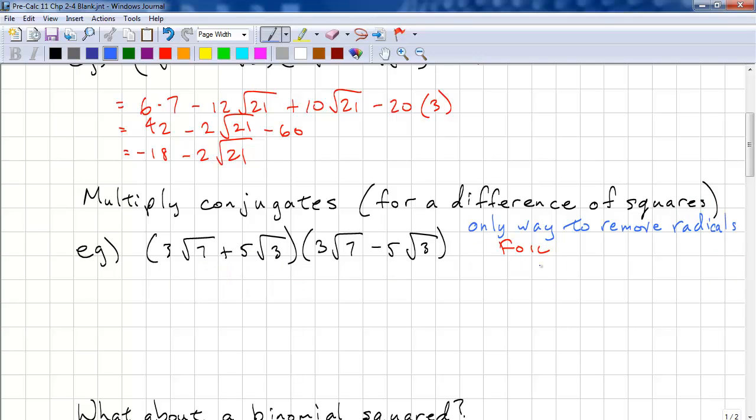Okay, again, we just FOIL this one. 3 times 3 is 9. And root 7 times root 7 is 7. So 9 times 7 equals 63. Outer. We have this one times this one. 3 times negative 5 is 15, negative 15. 7 times 3 is 21. We do the inner. Positive 5 times 3, so that's positive 15. And 3 times 7 again is root 21. And the last. 5 times negative 5 is negative 25. And 3 times 3 is 3 squared. So square root of 3 squared is 3.